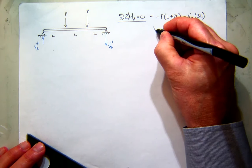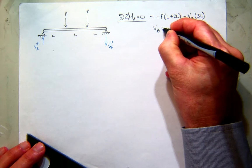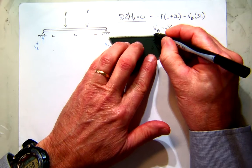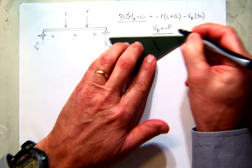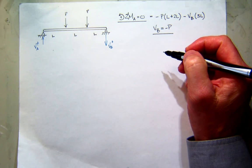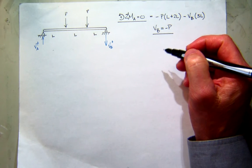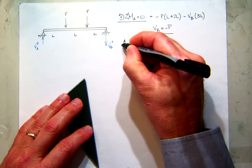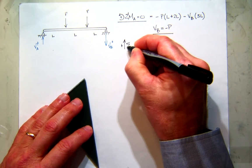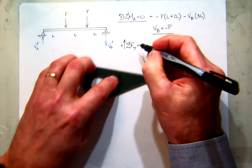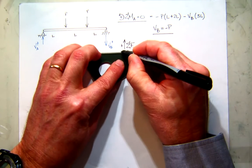So if you solve for the shear at B, you get minus P. So that means the shear at B is negative. Now I can come back and sum forces in the Y direction — there's my equilibrium statement.